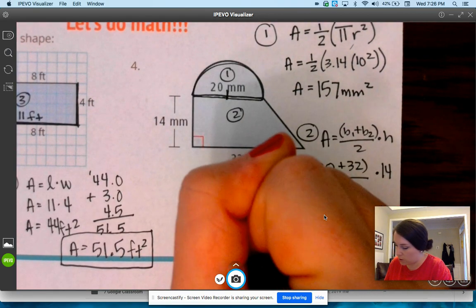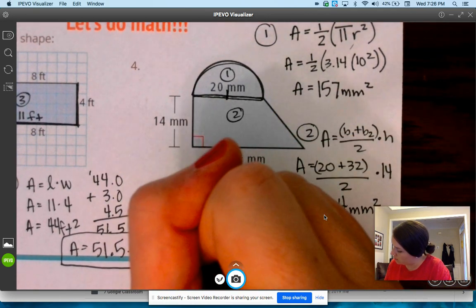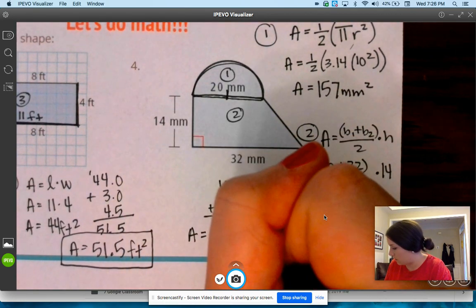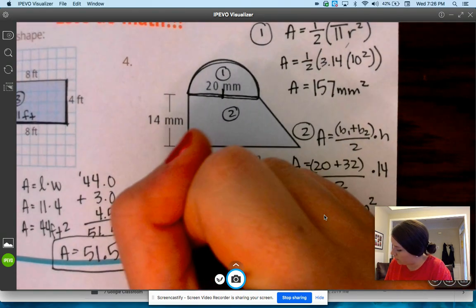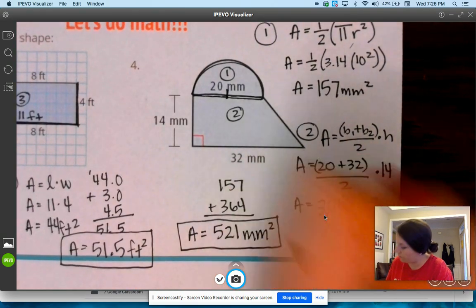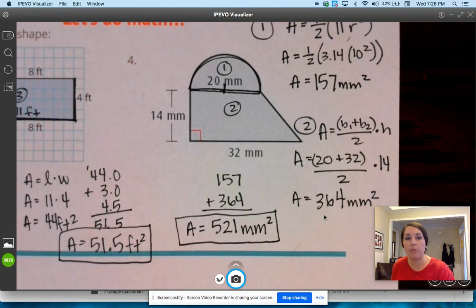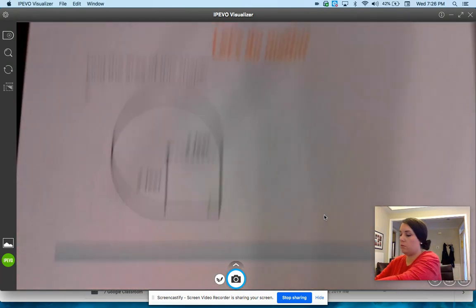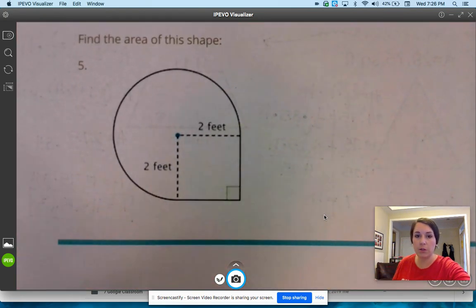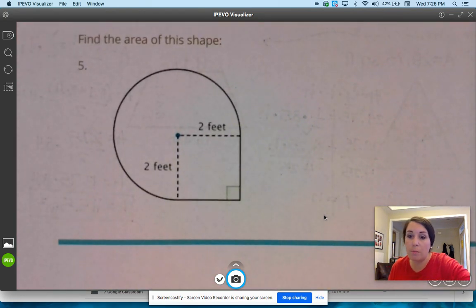Shape 2, area equals base 1 plus base 2 divided by 2 times height. So base 1, 20 plus 32, divided by 2 times 14. 52 divided by 2 times 14, 364 millimeters squared. Add them together: 157 plus 364, you get 521 millimeters squared.